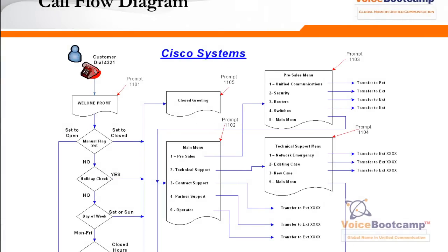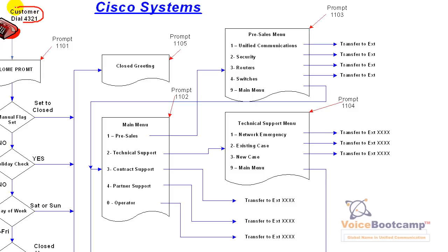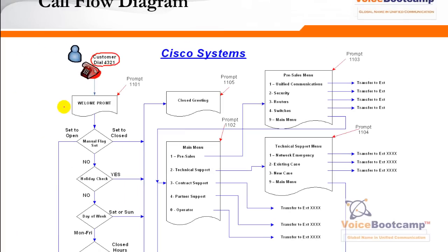This is a flowchart showing what happens at each step. The customer will dial a four-digit or eleven-digit number depending on how it's configured on your Call Manager or PBX. The call comes into the Cisco Unified Contact Center and the customer is supposed to hear a welcome prompt. But prior to the welcome prompt, we do some validation checks. First, we make sure the company is open. You can use time-of-day routing to control that, or create some sort of external file flag.